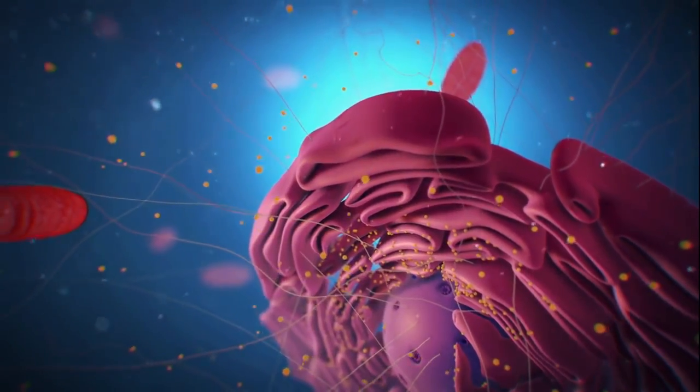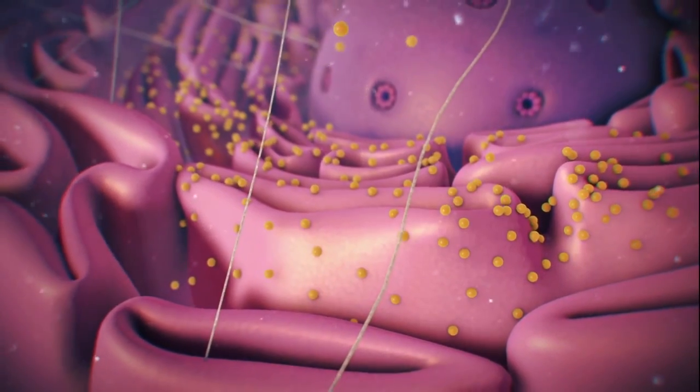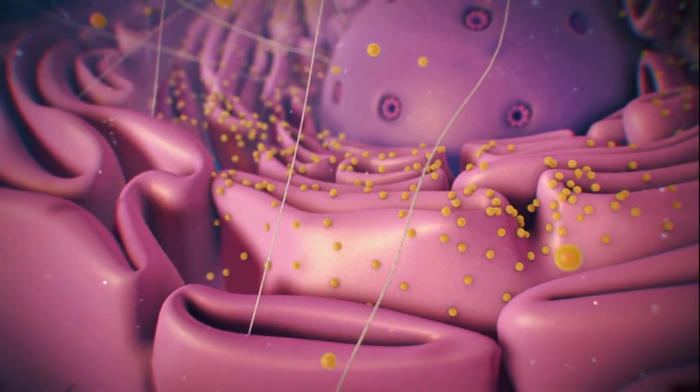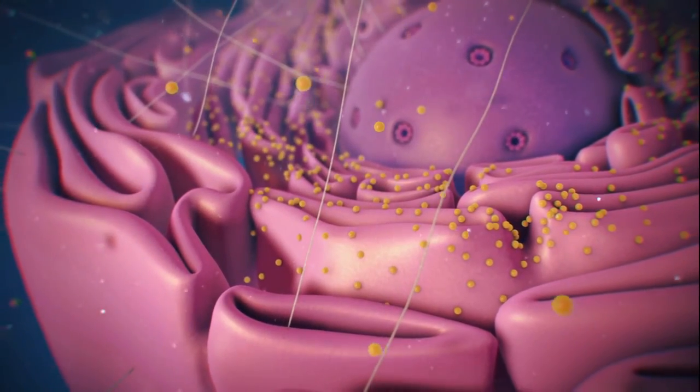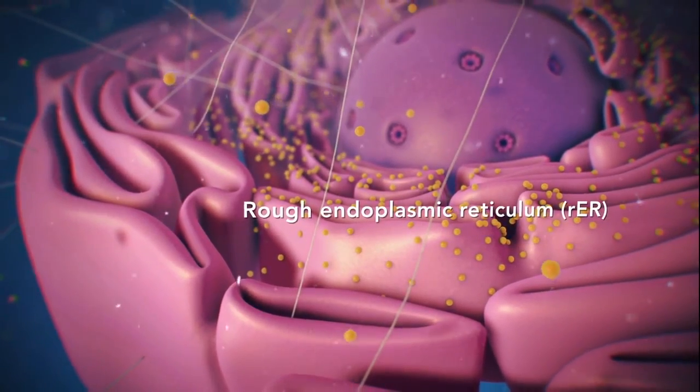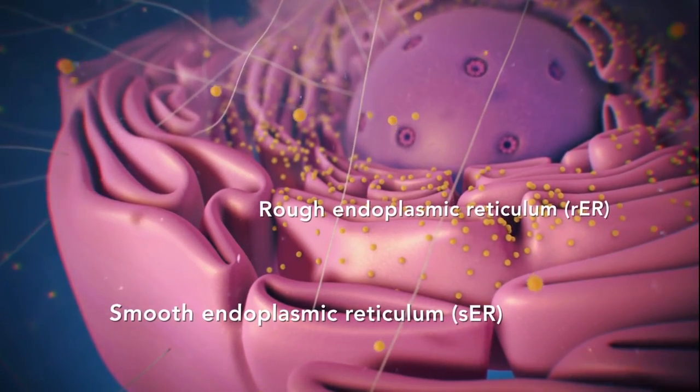Ribosomes may wander freely within the cytoplasm or attach to the endoplasmic reticulum, sometimes abbreviated as ER. There are two types of ER. Rough ER has ribosomes attached to it, and smooth ER doesn't have ribosomes attached to it.